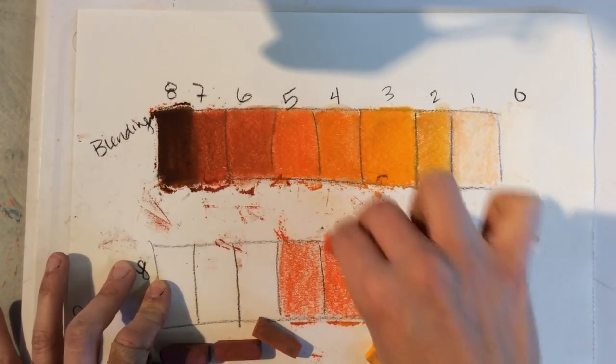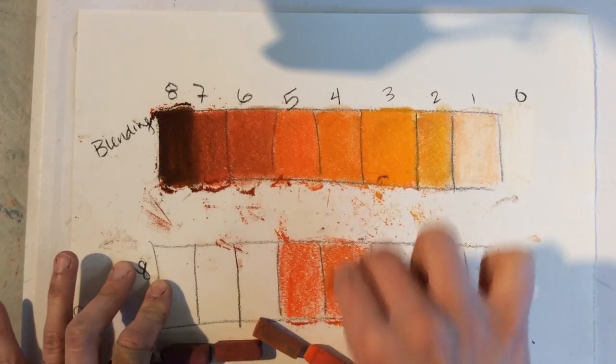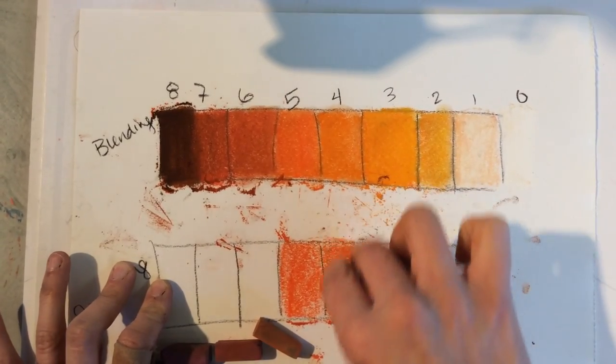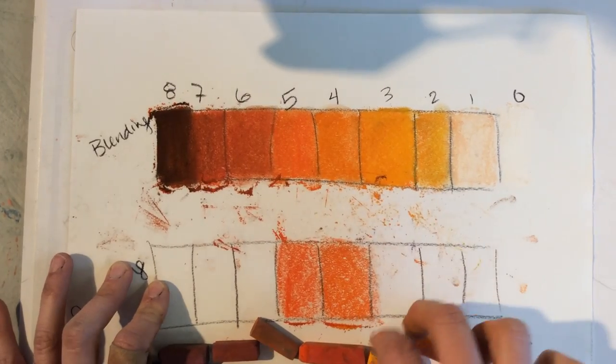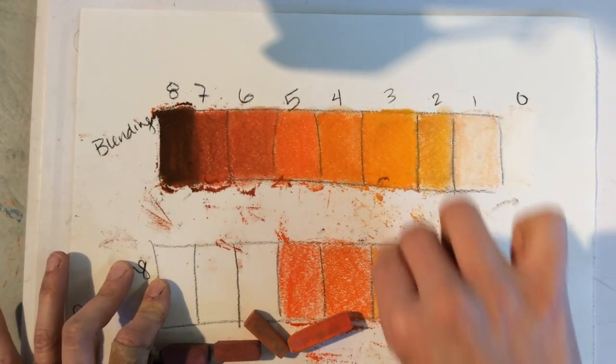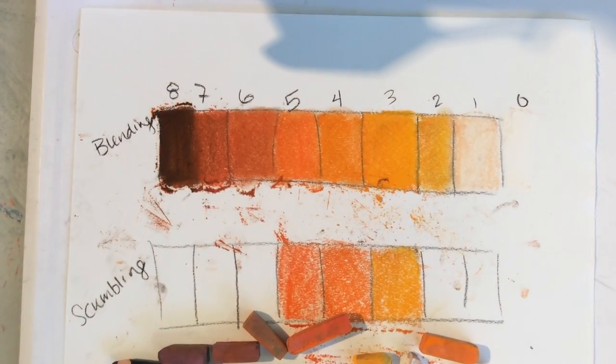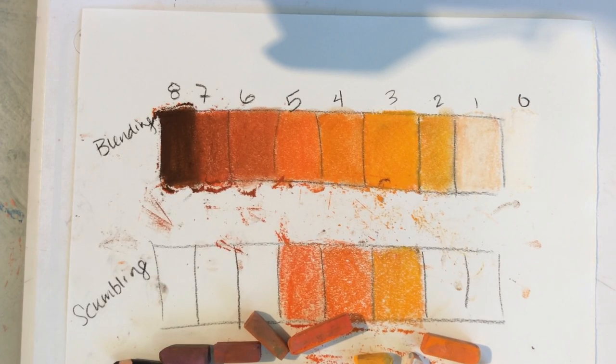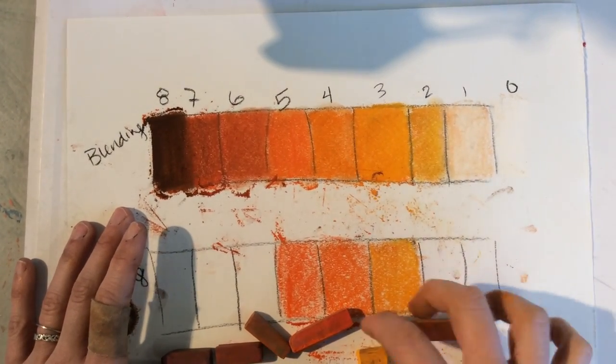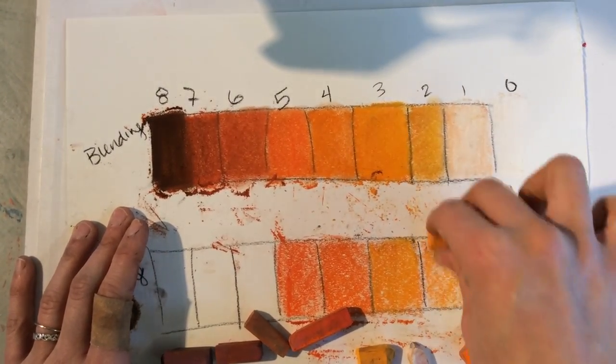So same process as I said. Remember we start in the middle, we work our way down. So in four I'm going to use one lighter. Again, scumbling is just using the edge of the chalk. Then I go down one, and I'm mixing by layering the sides of my chalk. There's no blending happening with my finger or the blending stick. It is all using that side of the chalk to mix your color.